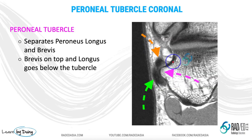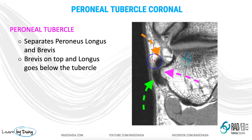On the coronal scans, we can use the perineal tubercle to differentiate between peroneus longus and brevis. They lie on either side of the perineal tubercle in the coronal images — peroneus brevis is superior to the tubercle and peroneus longus is inferior to the tubercle.